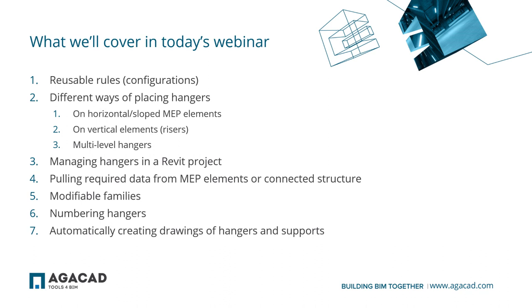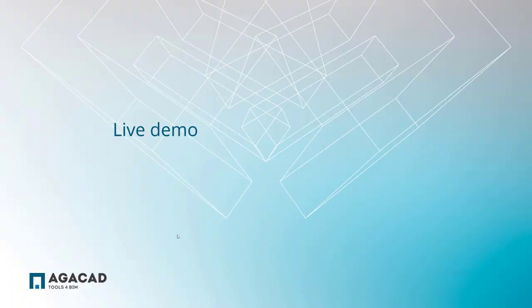With these evident problems, Revit still does not have a dedicated hanger placement solution, and the workaround of manually placing hanger families in a project is incredibly time consuming. So in the next part of this webinar, I will jump to the live demonstration in Revit to show you an automated way of inserting hangers. I will cover reusable rules, different ways of placing hangers, how to manage them in a project, how to modify hanger families, and an automated and customizable way of creating drawings of hangers and supports. Let's jump into the live demo.